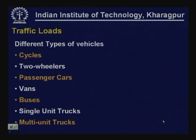When we consider traffic loading, we are referring to vehicles of different types with wide-ranging sizes, load magnitudes, and speeds — from bicycles and two-wheelers to passenger cars, vans, buses, single-unit trucks, and multi-unit trucks. We must determine which vehicles are important for pavement design and which specific parameters need to be considered as inputs.